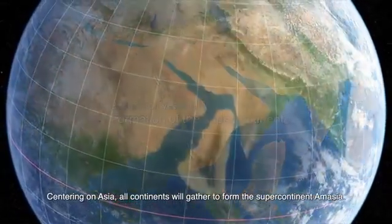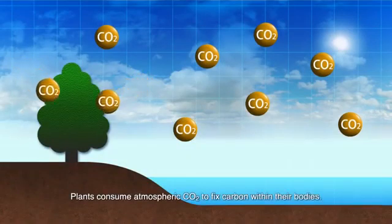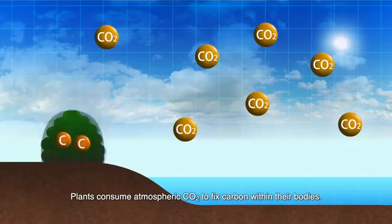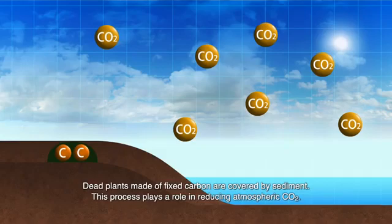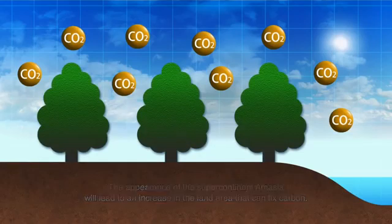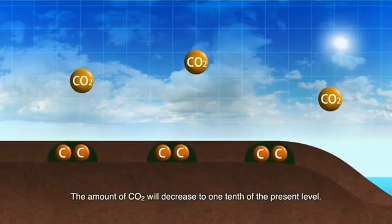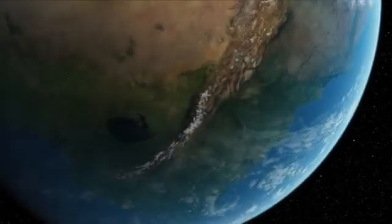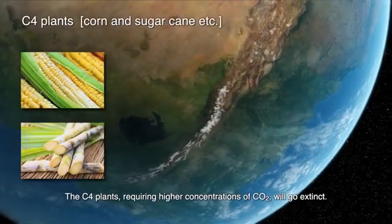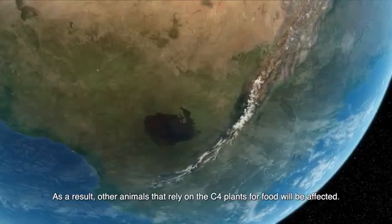Centering on Asia, all continents will gather to form the supercontinent Amasia. Plants consume atmospheric CO2 to fix carbon in their bodies. Dead plants made of fixed carbon are covered by sediment, playing a role in reducing atmospheric CO2. The appearance of the supercontinent Amasia will lead to an increase in the land area that can fix carbon. More plants on a larger supercontinent reduce more atmospheric CO2. The amount of CO2 will decrease to one-tenth of the present level. The C4 plants, requiring higher concentrations of CO2, will go extinct. As a result, other animals that rely on the C4 plants for food will be affected.